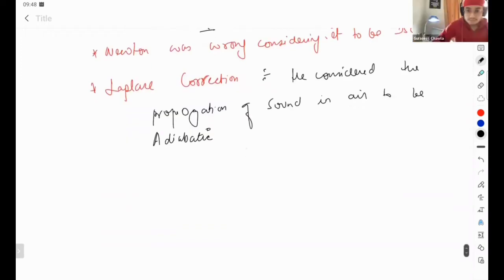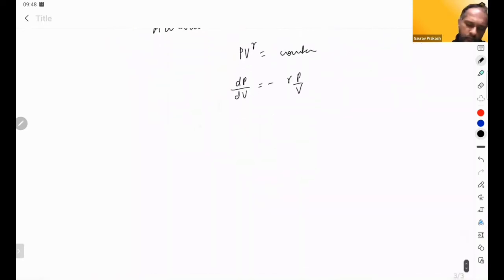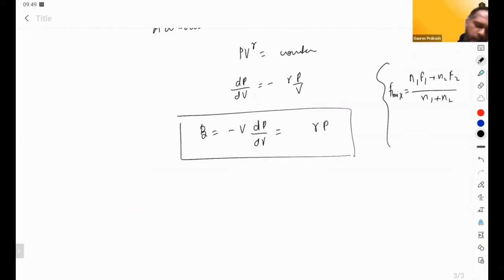So for him, the process equation was PV gamma equals constant. So slope dP by dV is minus gamma P by V. So for him, bulk modulus, which is minus V dP by dV, this comes out to be plus gamma times P. So C comes out to be square root of gamma P by rho.